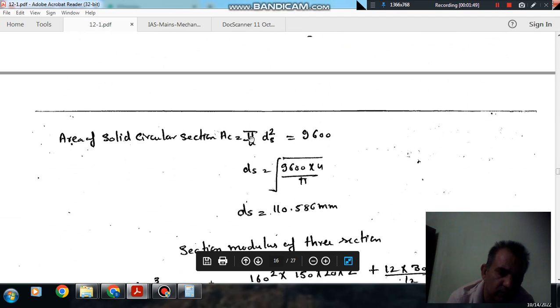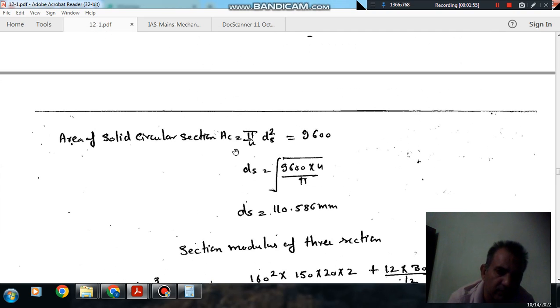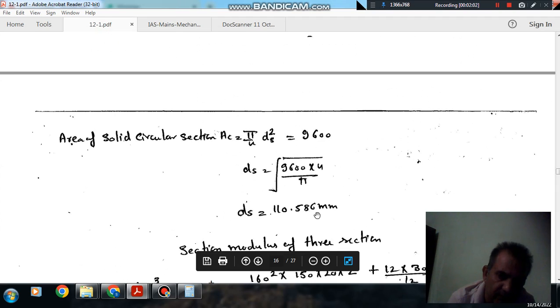Now area of solid circular section, third section is circular section. So area of solid circular section is pi by 4 ds square, ds is the diameter of circular section. And it is equal to 9600, so ds comes out as 110.586 mm.